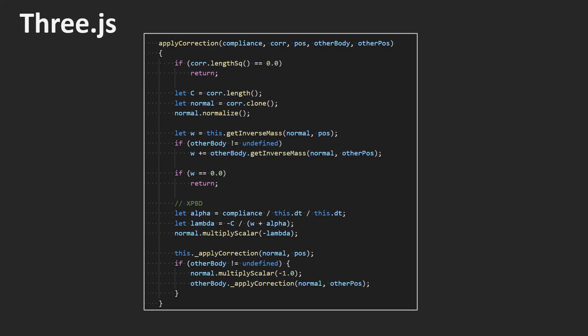The following implementation to handle distance constraints, together with the code for integration and velocity update I showed before, make up 90% of the implementation of the entire rigidbody engine. We first compute c and n. Then the inverse mass of the two bodies are computed. Next, we compute lambda using the xPBD formula. Finally, the corrections are applied to the bodies.